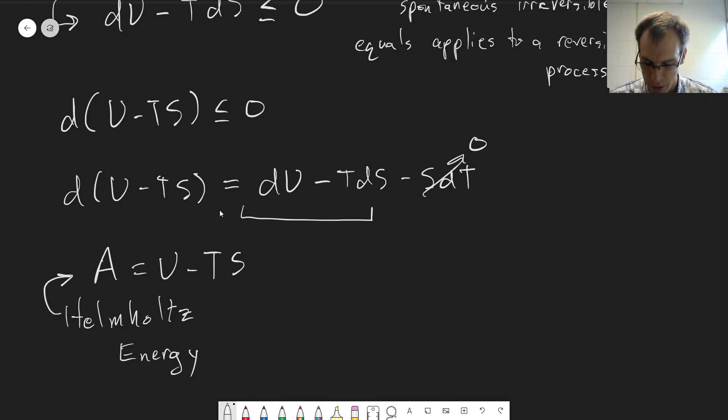And so another way of writing this equation here is that dA has to be less than or equal to zero. And that gives us our condition for spontaneity, or if something is happening reversibly. So we'll go ahead and pause there, and in the next video we'll start looking at implications of this.